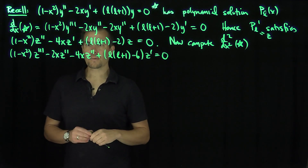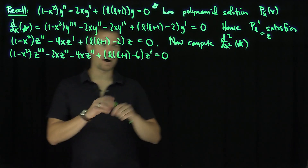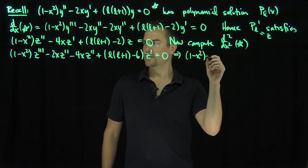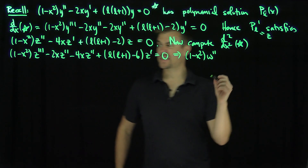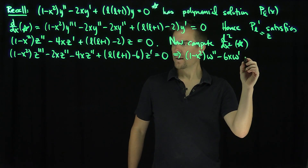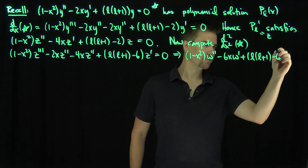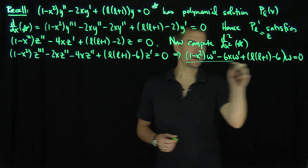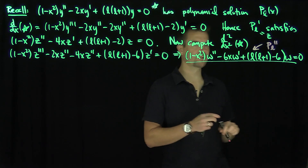The result is an equation in w = z' where z = P_l'. That gives us (1 - x²)w'' - 6xw' + [l(l+1) - 6]w = 0. This equation is satisfied by P_l''. In the next step, the coefficient pattern will give -8x and -12, and so on.